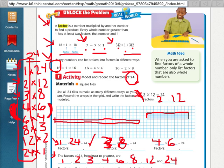Then I have to model 3 rows of 8. So I would go down 3 rows and across 8. That's my model for 3 times 8. And then 4 times 6. So I have to go down 4 and across 6. Okay, so there's my model for 4 times 6.